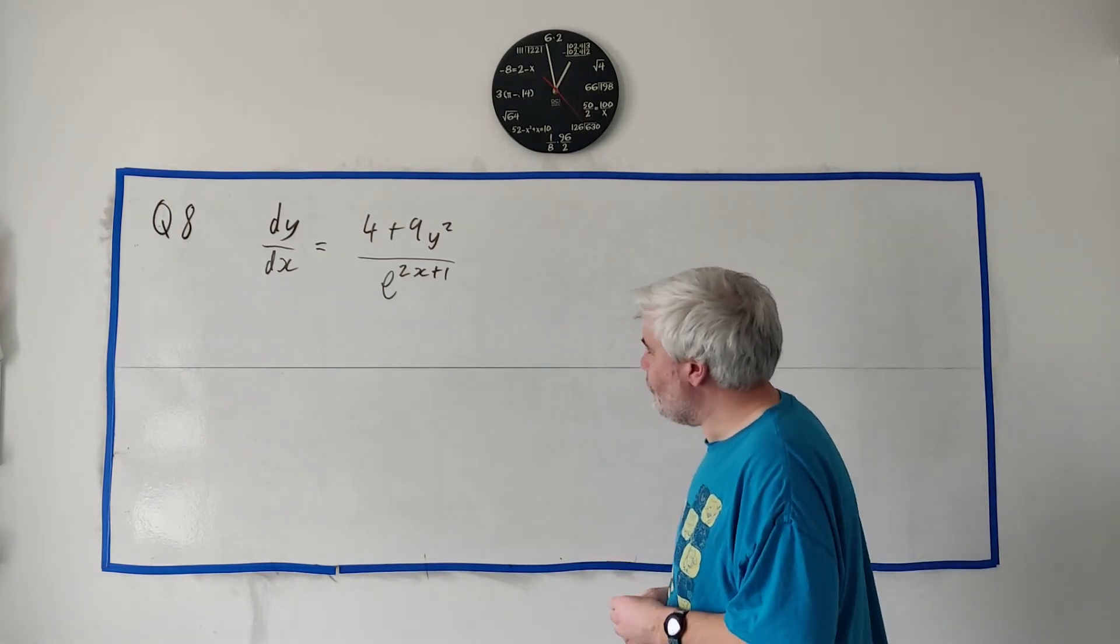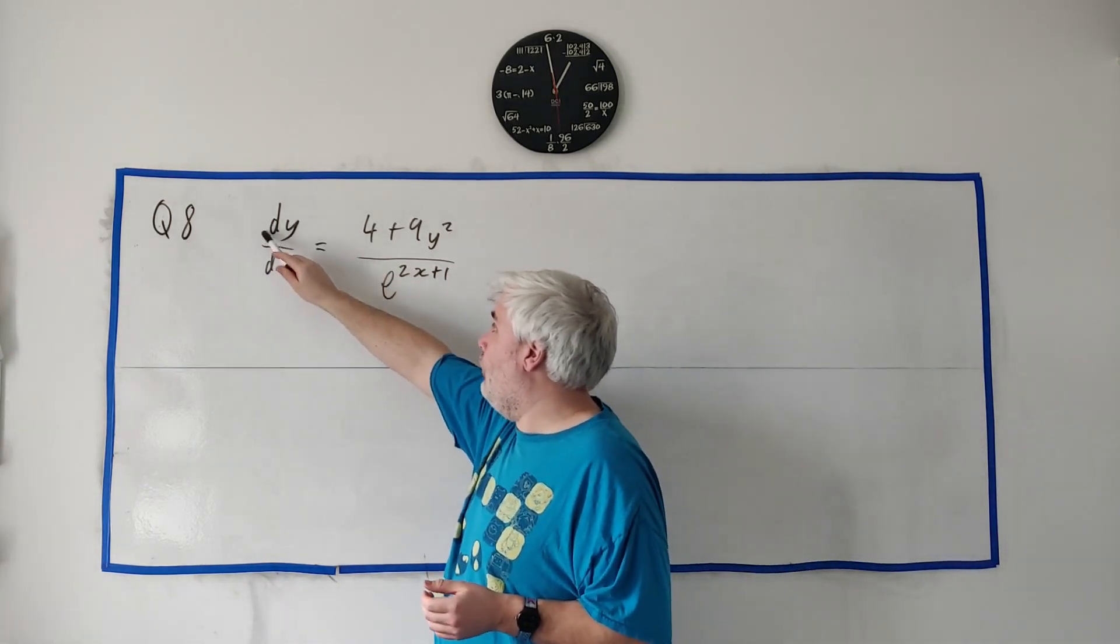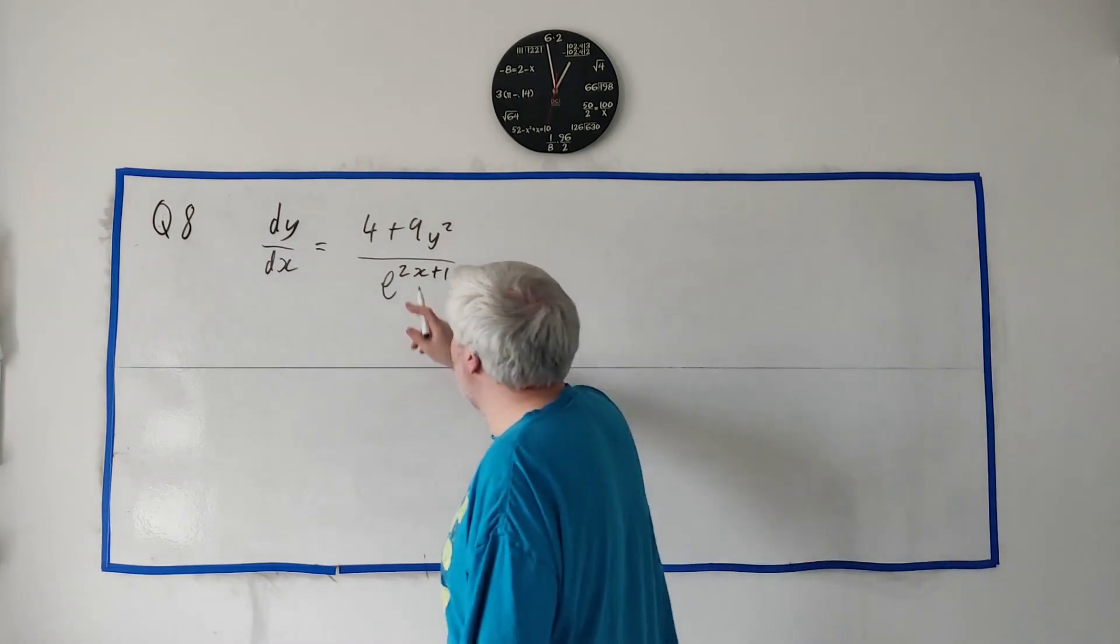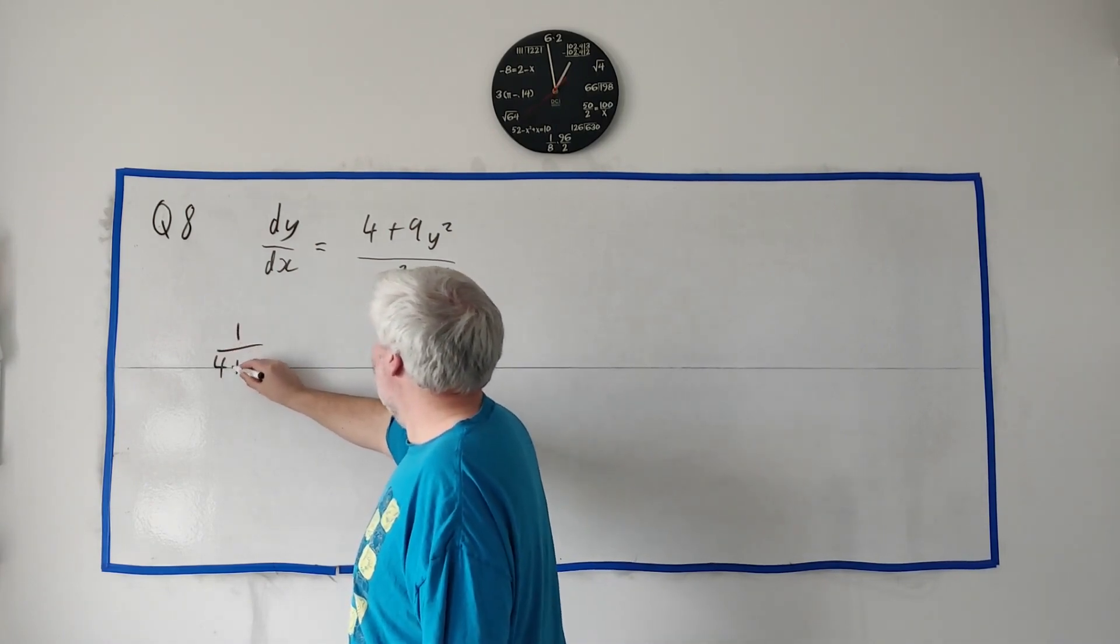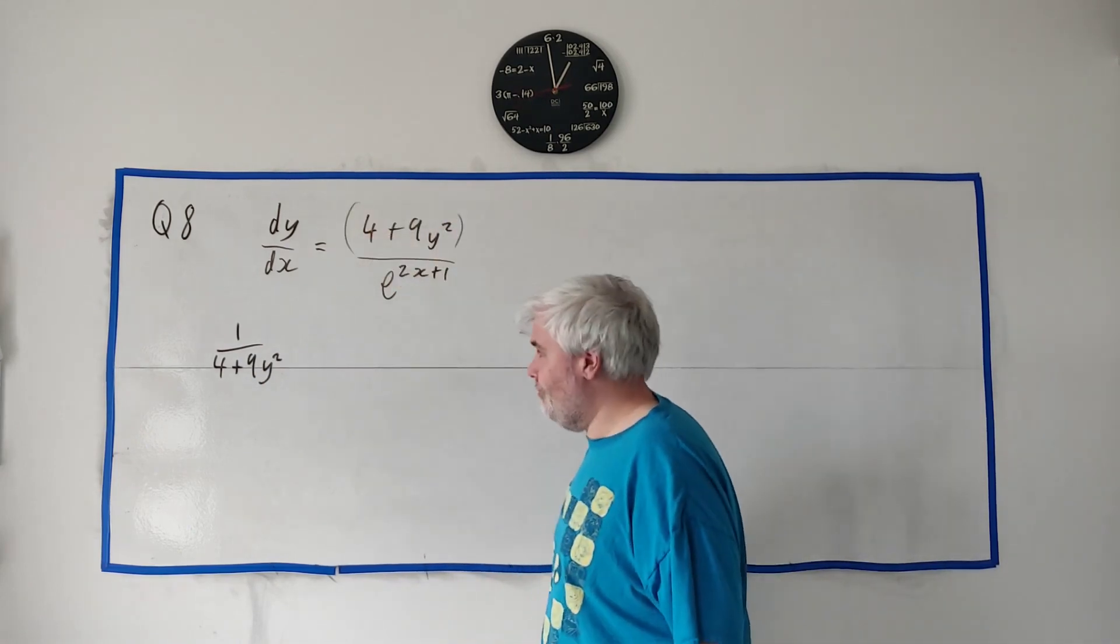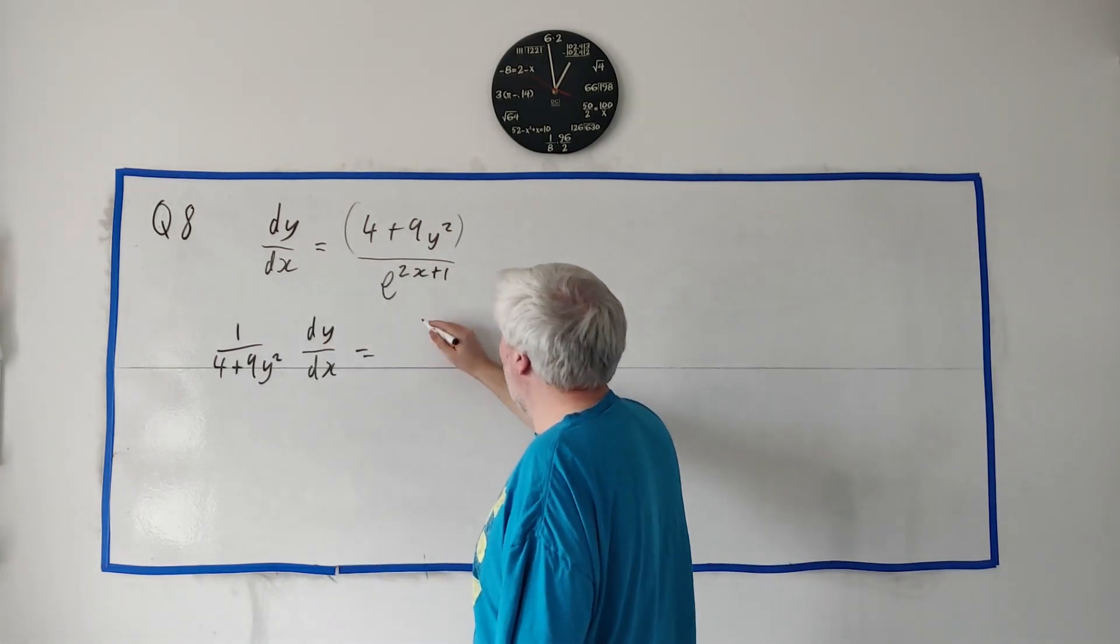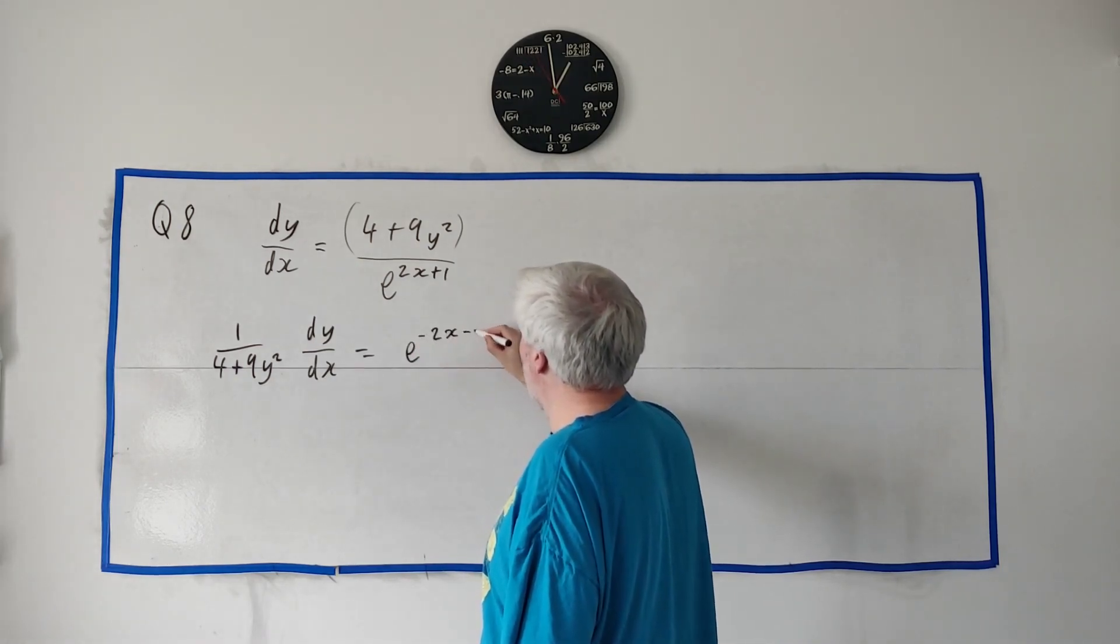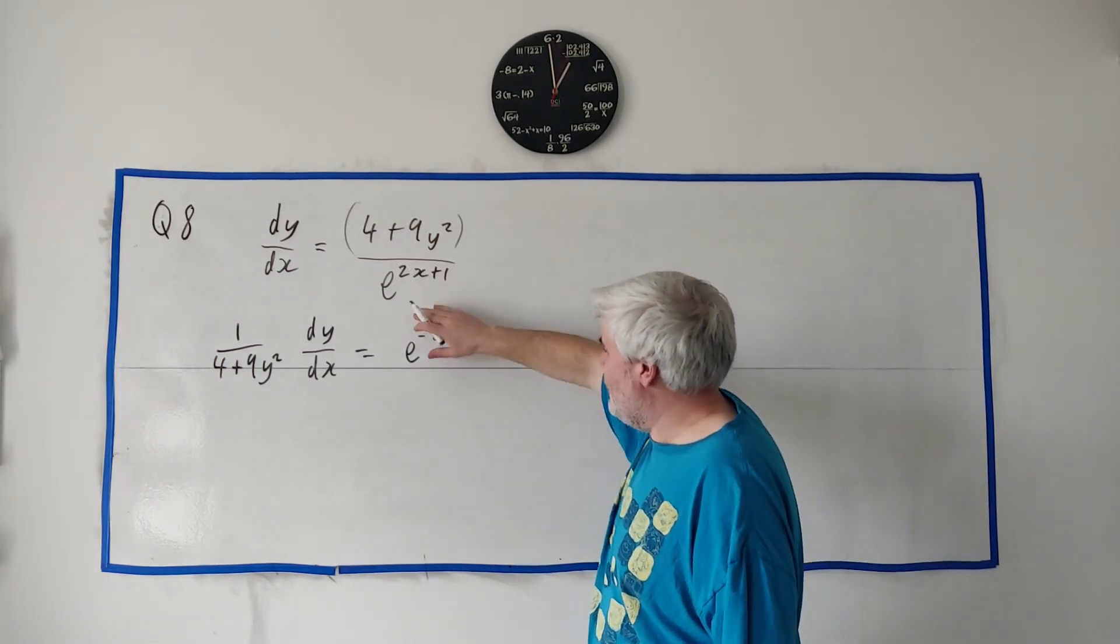I'm going to play around with this. What we want to do here is get all the Ys over with the DY here. At least that's how I think of it. So let's see. Let's move the Ys over this side. And we would get 1 over 4+4y² times DY/DX. When I say the Ys, I'm talking about the expression with Y in it. Basically this guy here.